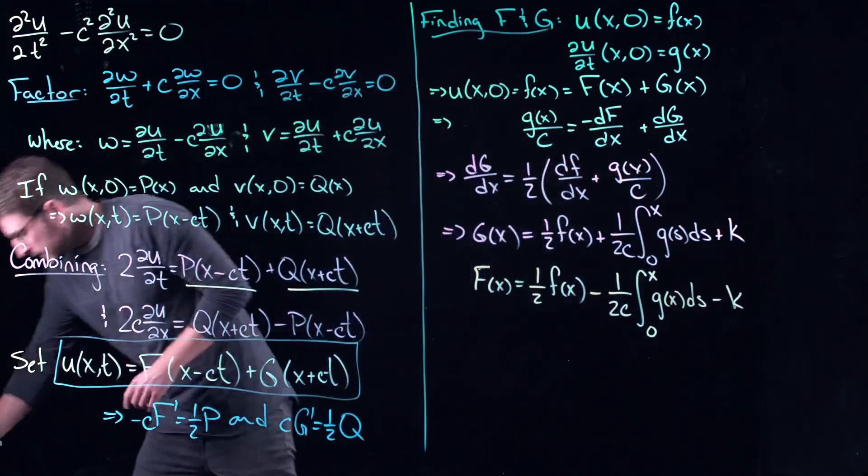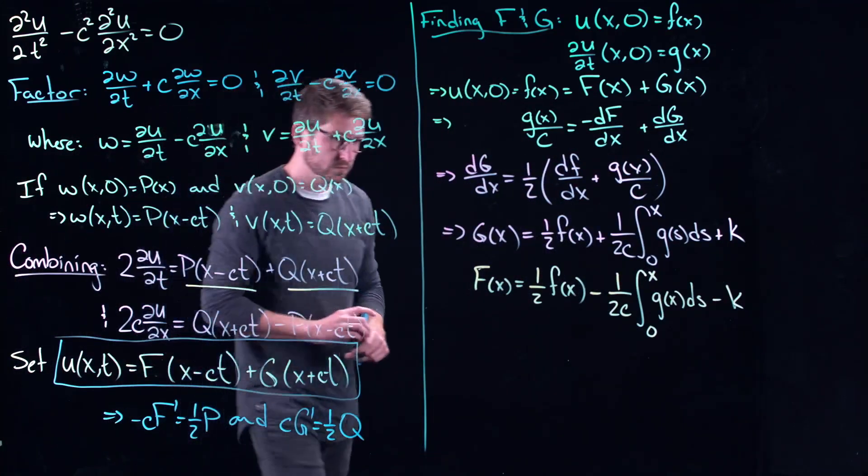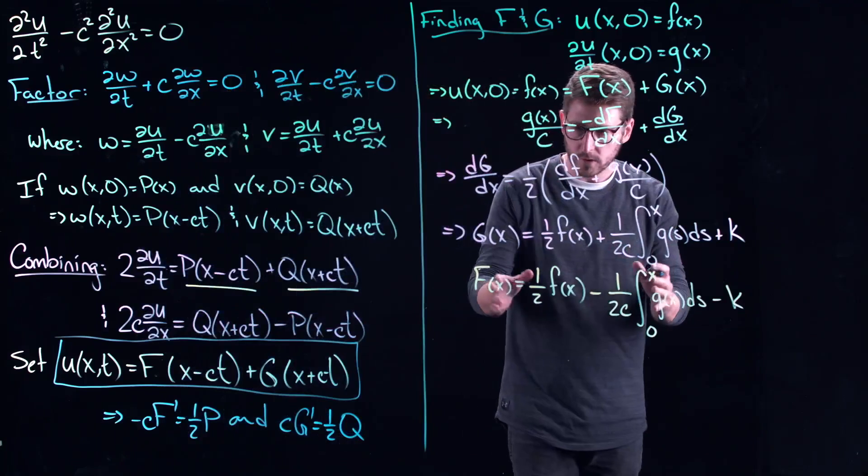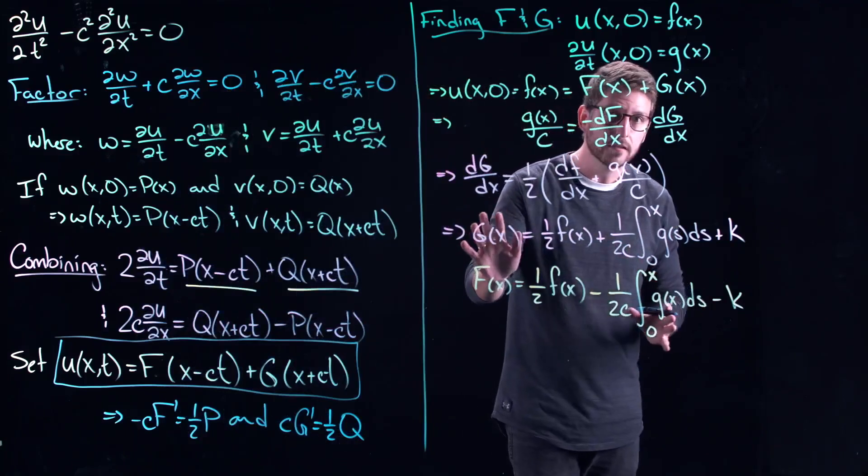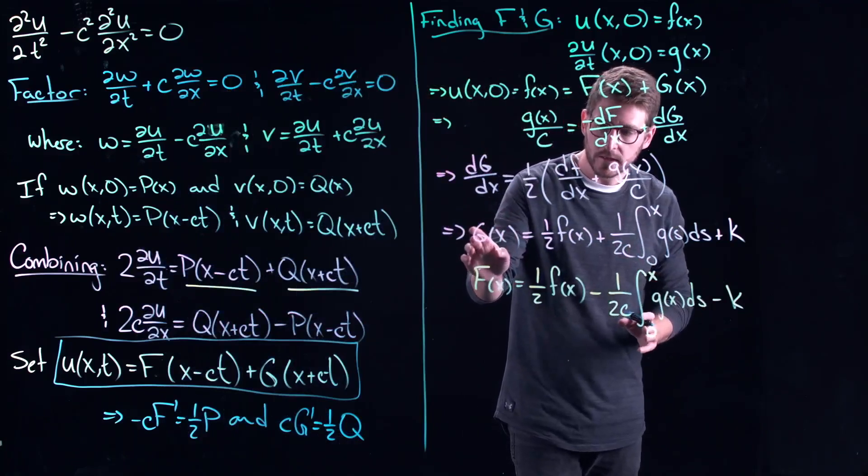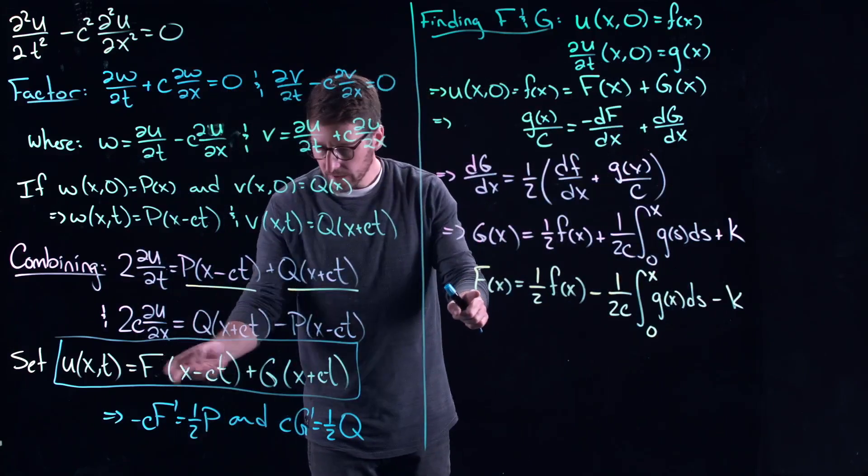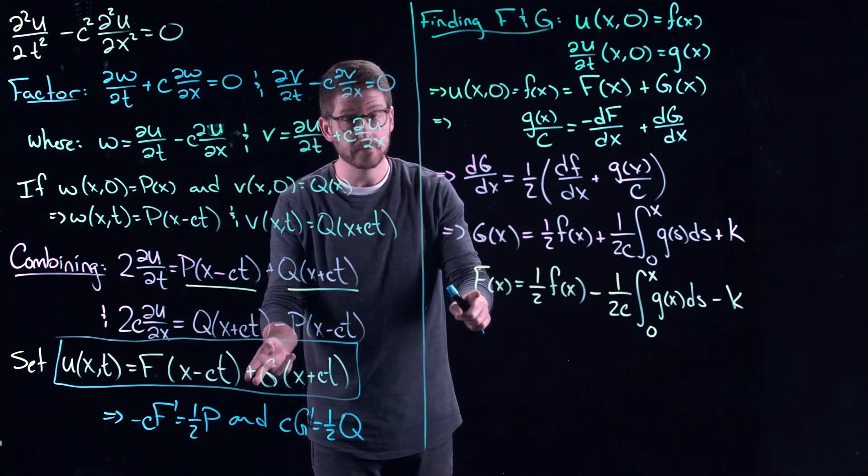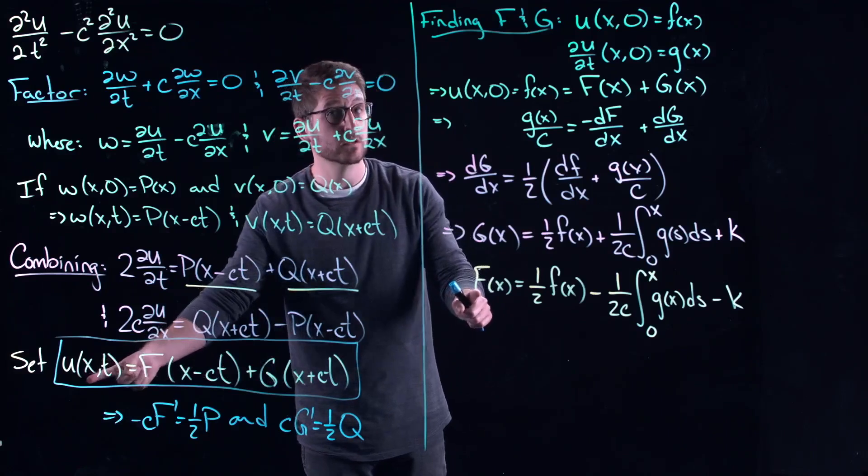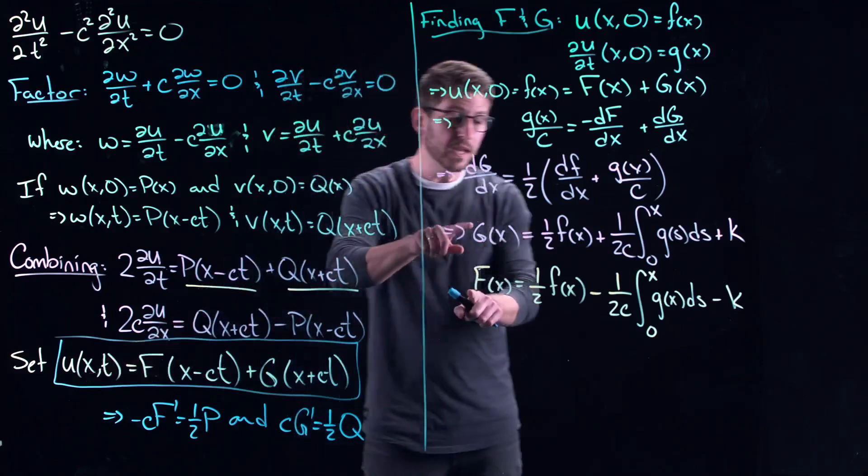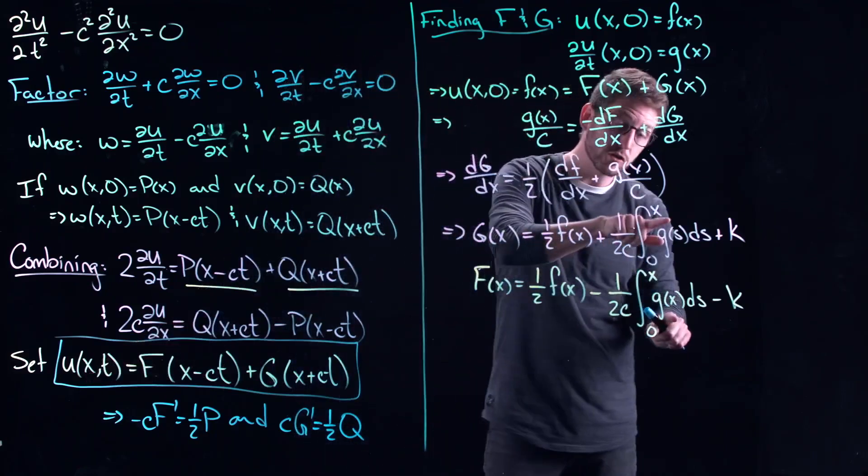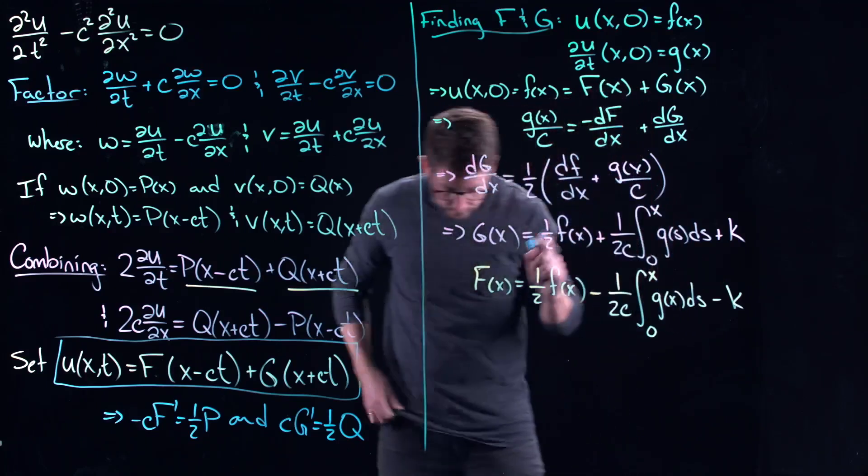So the question is, did this help me at all? Has anything sort of worked out? Well, yes. Because what happened was that G of X and capital F of X, they define the original leftward and rightward waves that are propagating from the original solution of U. But I've been able to write those things in terms of the initial conditions.